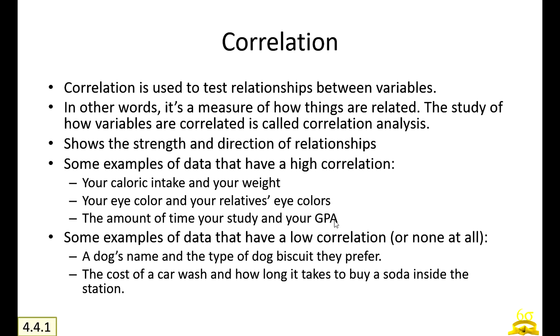Correlation is used to test the relationship between variables. In other words, it's a measure of how things are related, how different variables are related to each other. The study of how variables are correlated is called correlation analysis. This shows you the strength and the direction of the relationships. Strength means from say 0 to 100, and the direction whether it is positive, negative, or flat.